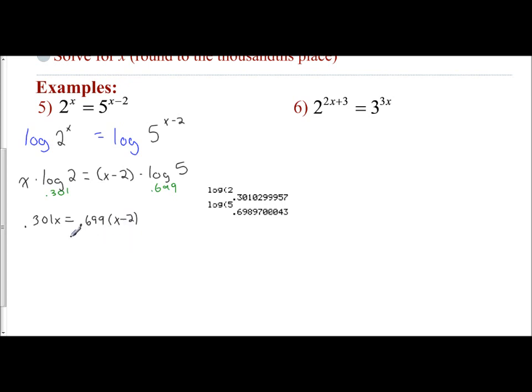Now the reason why we do this at this step is it's actually easier to see the process. I see if I want to solve an equation like this, I'm going to have to distribute this to both terms. And so I have 0.301x equals 0.699 times 2x minus 1.398.